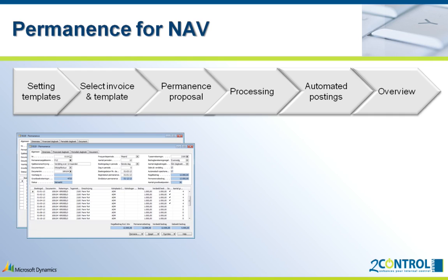The module permanence offers you the solution. In a few simple steps you can divide costs between periods and dimensions. You will still use the standard recurring journal. I will now show you the working of the module.